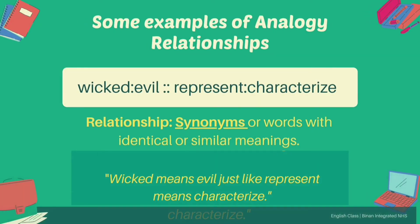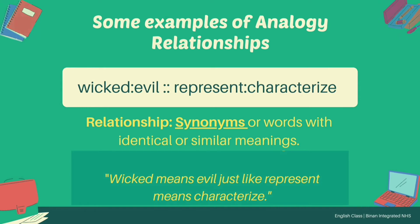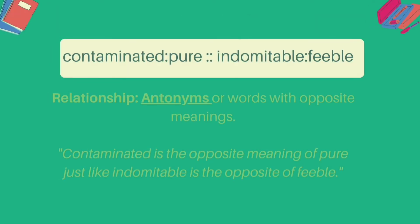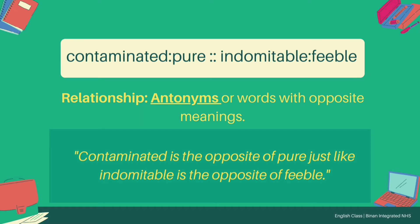Some examples of analogy relationships. Wicked is to Evil as Represent is to Characterize. Relationship: synonyms, or words with identical or similar meanings. Wicked also means Evil, just like Represent also means Characterize. Contaminate is to Pure as Indomitable is to Feeble. Relationship: antonyms, or words with opposite meanings. Contaminate is the opposite of Pure, just like Indomitable is the opposite of Feeble.